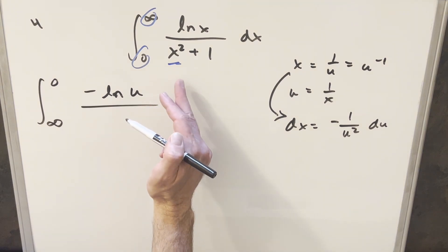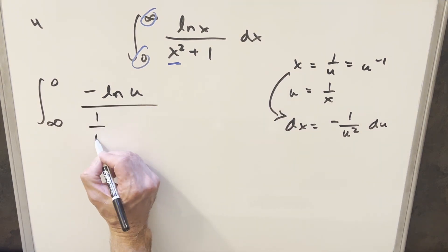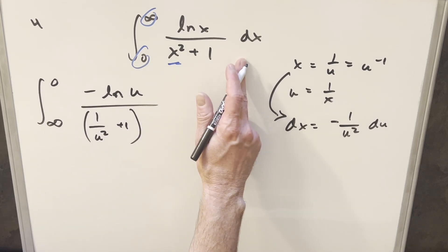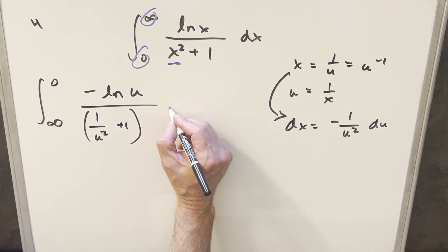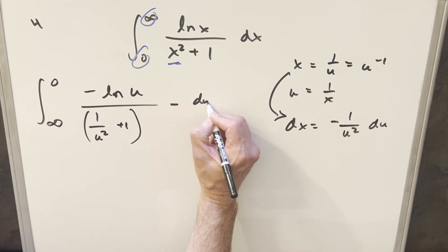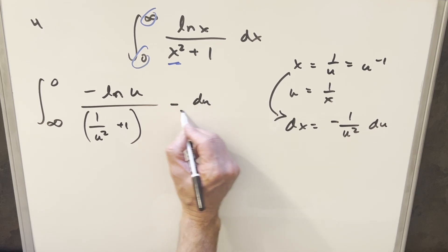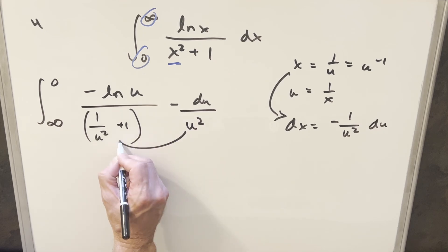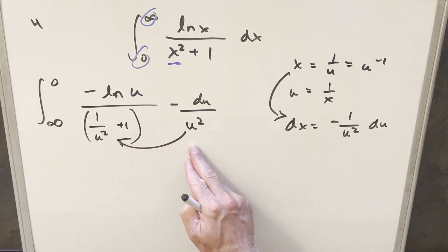Then denominator on x is going to be one over u. So I'll write this as one over u squared plus one. Let's put parentheses because we're going to need it for this dx to keep it all clear. So we're going to have minus du and let's kind of write the u squared like this because I'm going to want to just multiply this in right here.